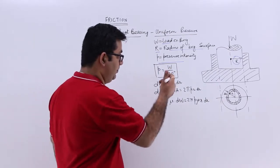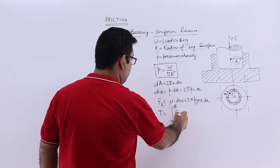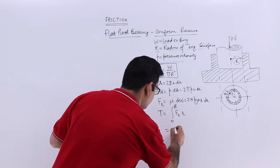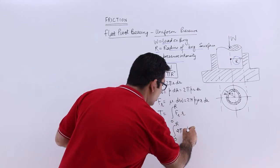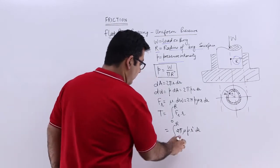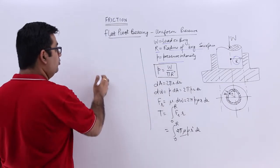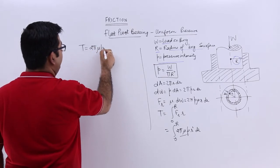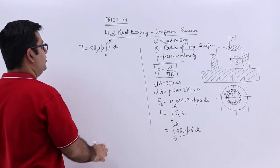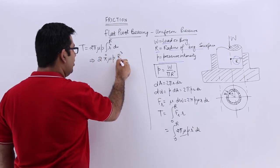Now the torque on this particular shaft would be integral 0 to capital R of fr into small r. So you will have 0 to capital R, 2 pi mu P r into r becomes r square, and then you will have dr. You can bring this 2 pi P outside the integral sign. This will give you T is equal to 2 pi mu into P, integral 0 to capital R, r square dr. This will result in 2 pi mu P r cube upon 3.